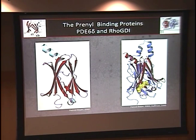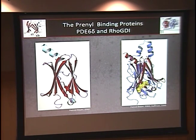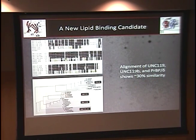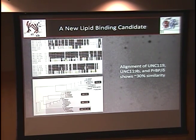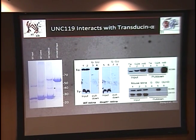This is the structure of PDE-delta — it has a beta sandwich fold with a cavity in the middle. When we overlay it with another known prenyl binding protein called RhoGDI, with a prenyl moiety in its pocket, you can see this pocket can accommodate a prenyl binding protein. So the question is: why do some prenylated proteins make it from inner segment to outer segment, but others don't? We aligned a protein we were interested in — UNC-119 — with PDE-delta, and found they're 30% similar and biologically related by dendrogram.